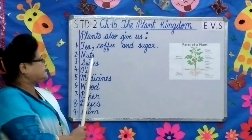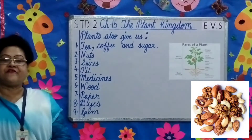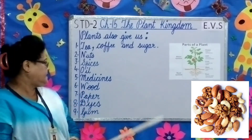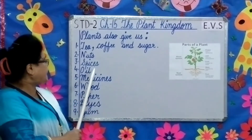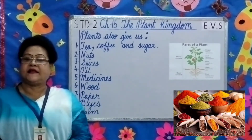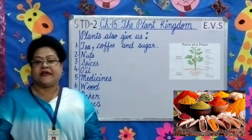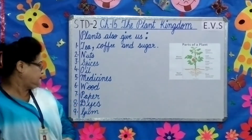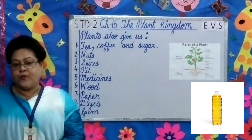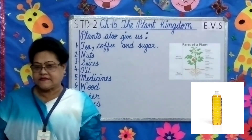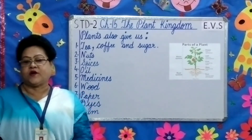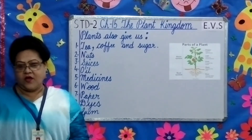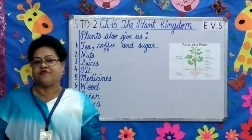Nuts are dry fruits and are a rich source of energy. Spices are added to food to give it flavor, taste, and color. We get oil from plants like groundnut, coconut, olive, and sunflower. Oil is used for cooking food.